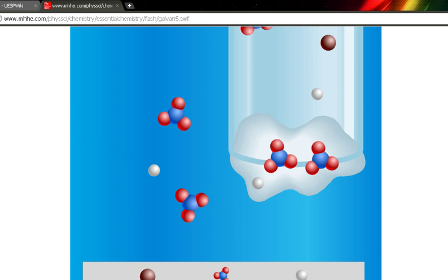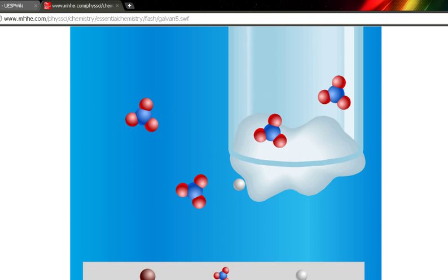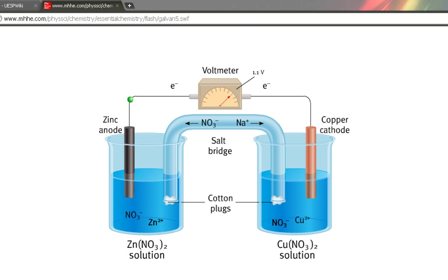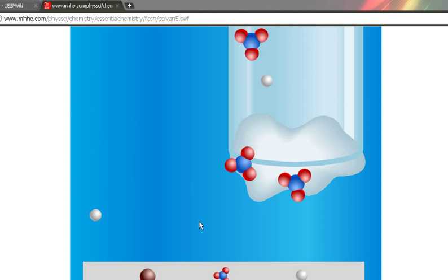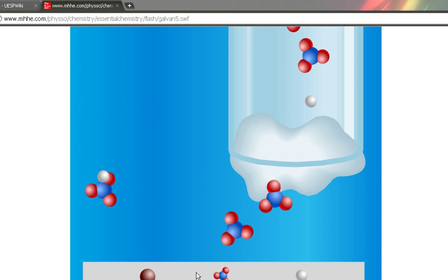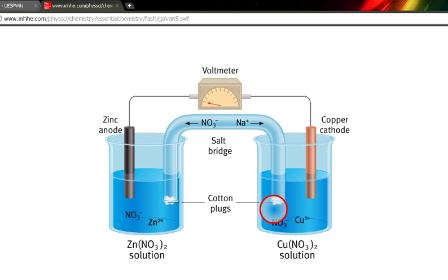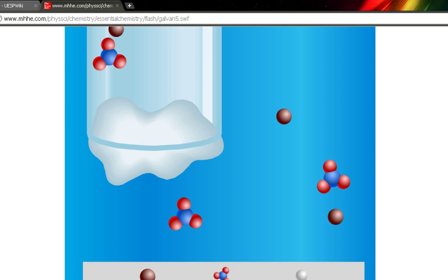The ions in the salt bridge actually flow into either half cell, where if you're dealing with the anode side of the reaction, the anions flow to the anode, and the cations flow to the cathode.